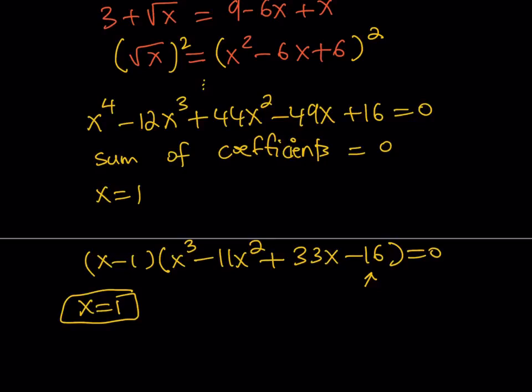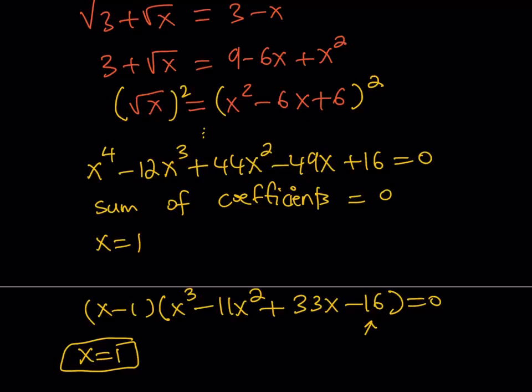And also, one thing to keep in mind is that, let's say you found some solutions. You still have to check them. Why? Because when you square both sides here, you're actually introducing extraneous solutions, which are not solutions, solutions that are not solutions. What does that mean? It means that they're not going to satisfy the original problem because you modify the domain.